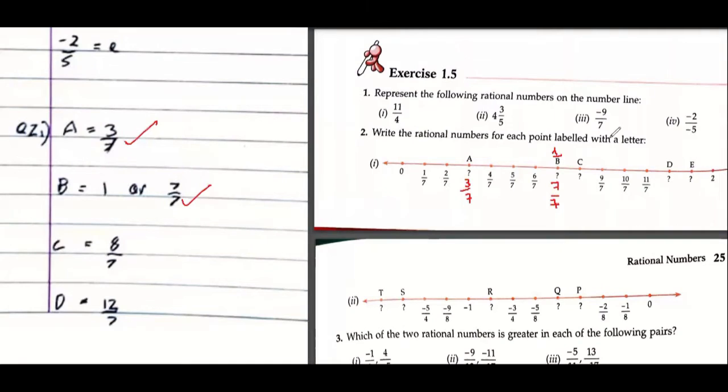Next would be eight upon seven - this is perfectly fine - nine upon seven, ten, eleven. So 12 upon 7, 13 upon 7. D is 12 upon 7 and E would be 13 upon 7. Hope you have done this on the next page.